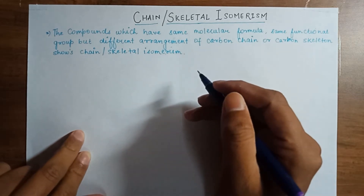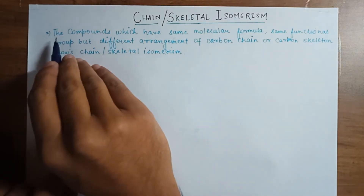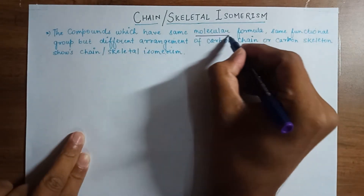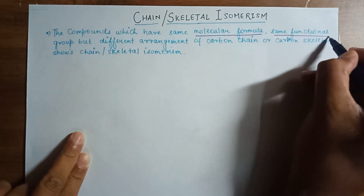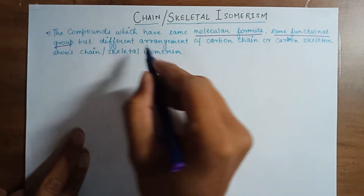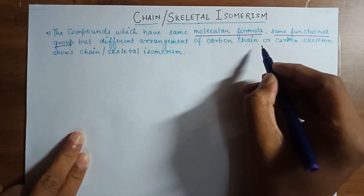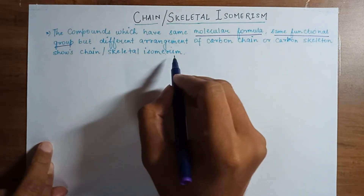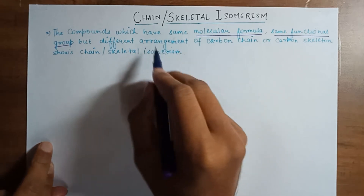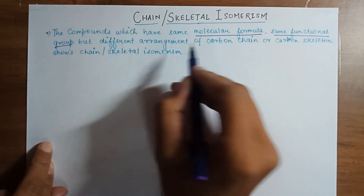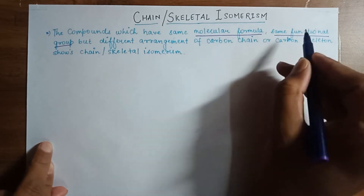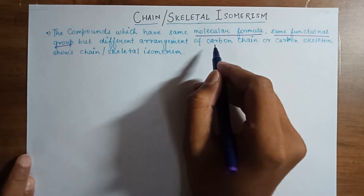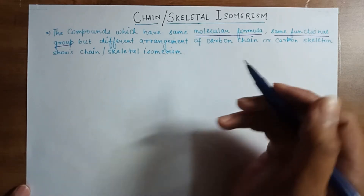We will see what chain or skeletal isomerism is. The compounds which have the same molecular formula, same functional group but different arrangement of carbon chain or carbon skeleton show chain or skeletal isomerism. What is important in this definition is that these isomers will have the same molecular formula, same functional group but the arrangement of the carbon chain will differ. We will understand this concept by looking at a few examples.